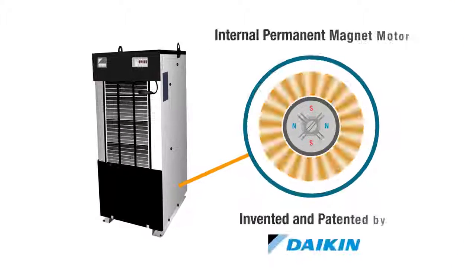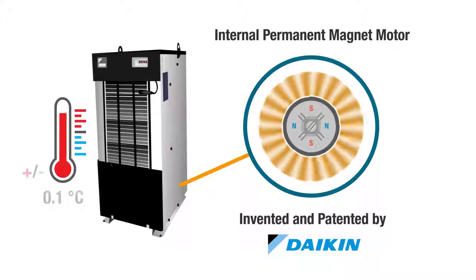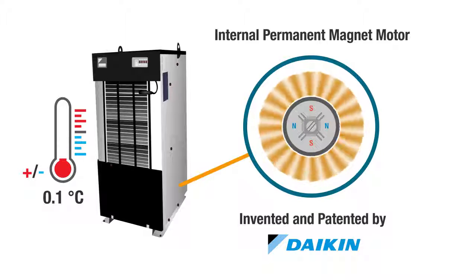Daikin patented IPM motor and inverter technology design improves machining accuracy by precise temperature control as low as plus or minus 0.1 degree Celsius, minimizing metal deformation of your products due to heat.